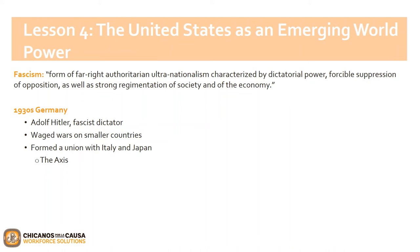In other words, fascist nations did not like democracy and aimed to take over other nations. In the 1930s, Germany was being led by fascist dictator Adolf Hitler, who began waging war against smaller nations. At the same time, Italy was trying to take over Ethiopia in Africa, and Japan was attacking China. Germany saw this as an opportunity to form alliances to become the superior nation. Germany, Italy, and Japan formed a union called the Axis.